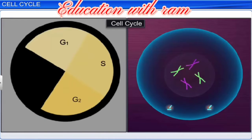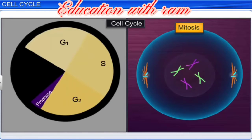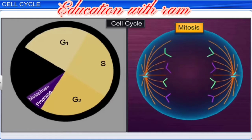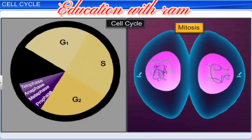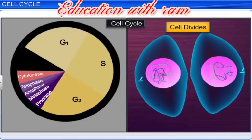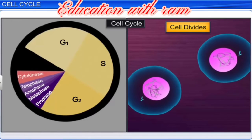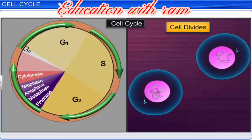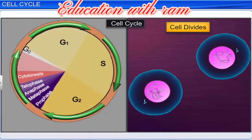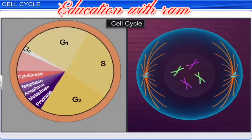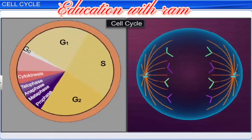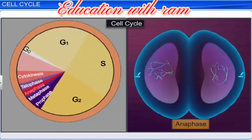The process by which a cell synthesizes its constituents and eventually divides to form two daughter cells is known as the cell cycle. Although the process of cell growth is a continuous one, DNA synthesis takes place only during one particular stage in the cell cycle. After DNA synthesis, the replicated chromosomes, or the DNA, are distributed to the daughter nuclei.